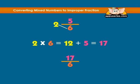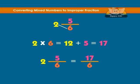The denominator remains the same, which is 6. Hence, our improper fraction becomes 17 over 6.